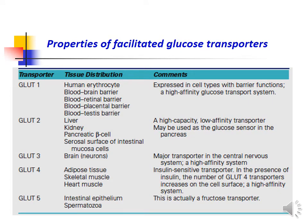The glucose transporters are categorized into glucose transporters 1, 2, 3, 4, and 5. Glucose transporter 1 is mainly located in the human erythrocyte, blood-brain barrier, blood-retinal barrier, blood-placental barrier, and blood-testis barrier. It is expressed in cell types with barrier functions and is a high-affinity glucose transport system.